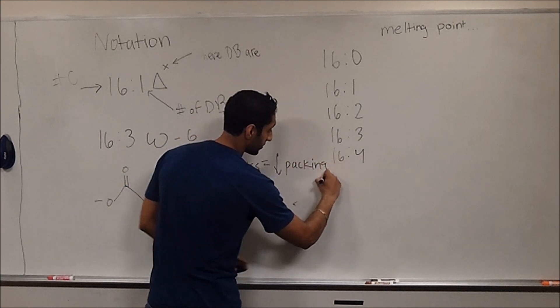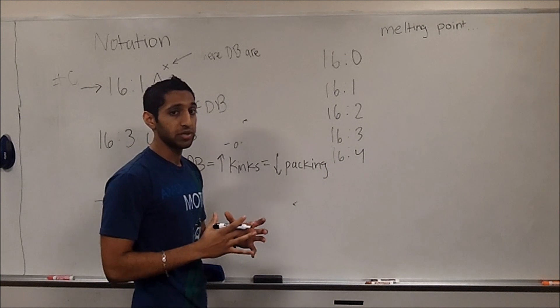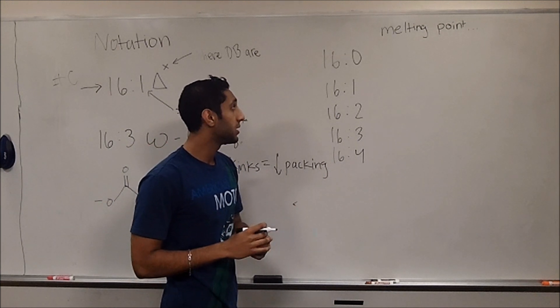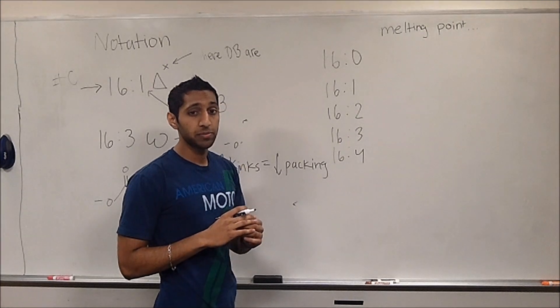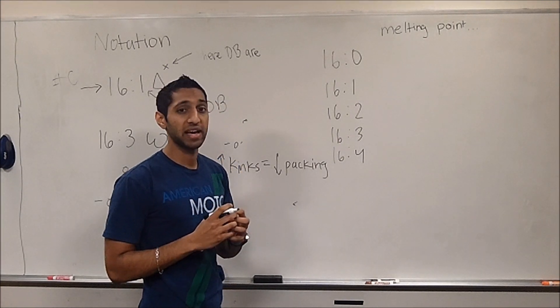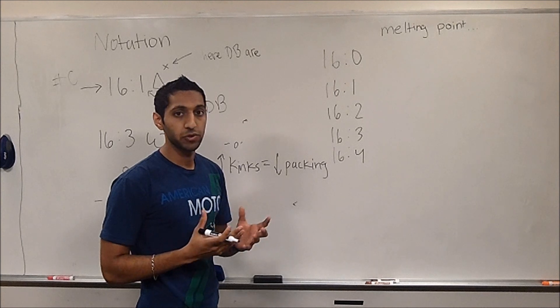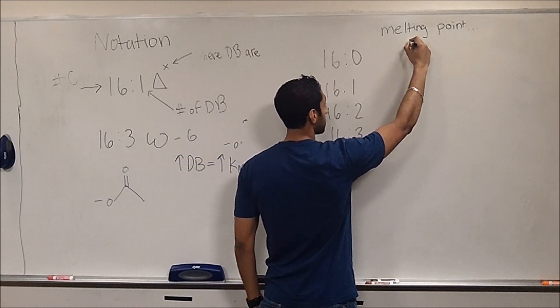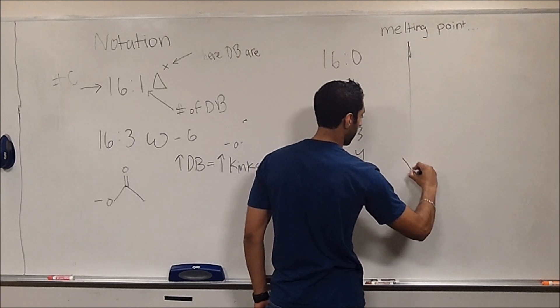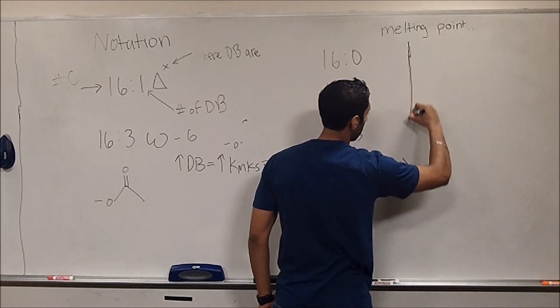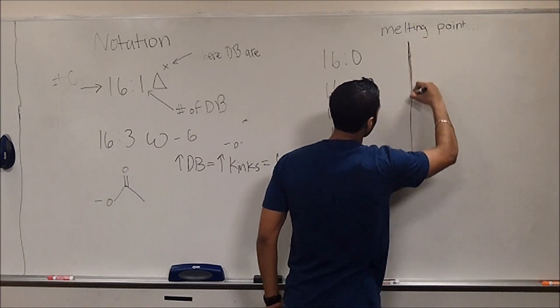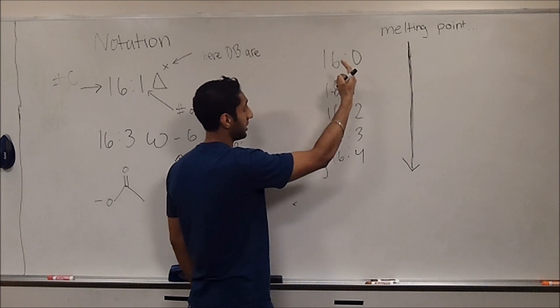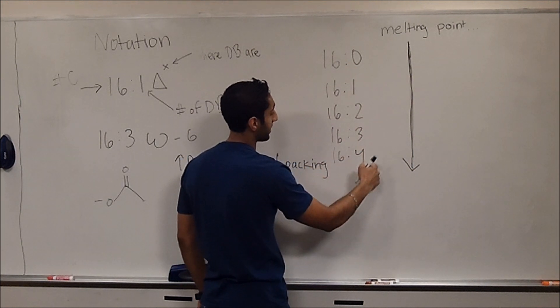But what does this really mean? Since you can't pack it very well, they're going to be very fluid, just like in a plasma membrane. So the melting point is going to decrease because it's not very packed, and it's much more fluid when temperatures increase. We can expect each of these to decrease as temperature is increasing. Therefore, we'll have a lower melting point for each of these respective fatty acids.